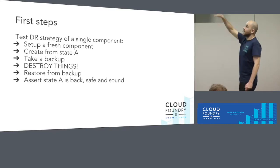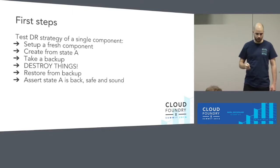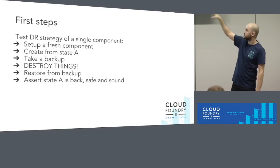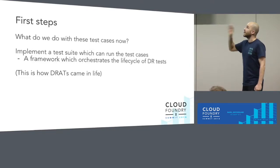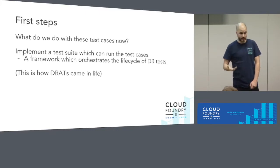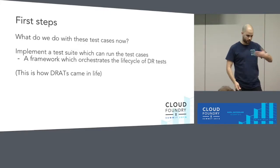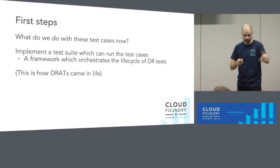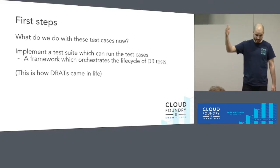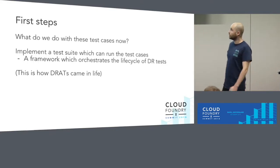This is how a test case looks like — just to remind ourselves, we have all these steps. It's not just a straightforward thing where I have a feature, I put some input, I get some output, and then assert it. We need some kind of orchestration. As soon as we have these test cases, we need something to run them. We need a test suite — a framework that orchestrates this lifecycle: creates something, pushes some state, takes a backup, destroys things, and all these things we talked about. And this is how DRATS came to life. DRATS is a Disaster Recovery Acceptance Test we wrote — a framework that all these test cases run on.